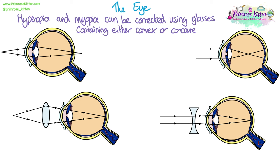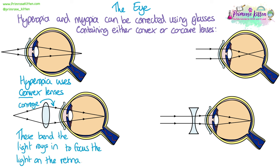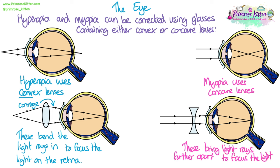Hyperopia and myopia can be corrected using glasses containing either convex or concave lenses. To correct hyperopia we use convex lenses, which bend the light rays inward — they converge the light rays to focus the light on the retina before they go through the lens. For myopia we use concave lenses — the opposite — which diverge the light rays, spreading them further apart before they enter the lens, allowing the light to focus onto the retina.